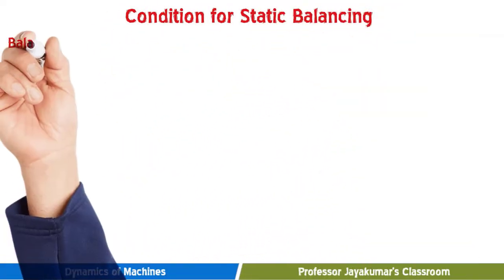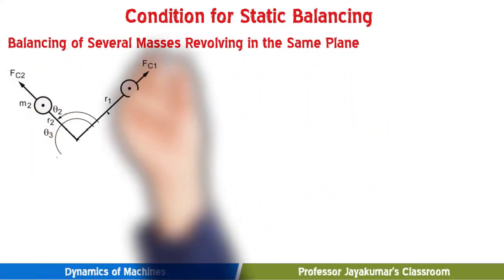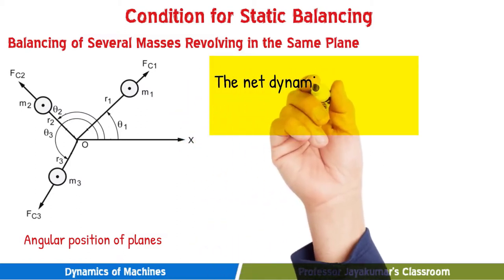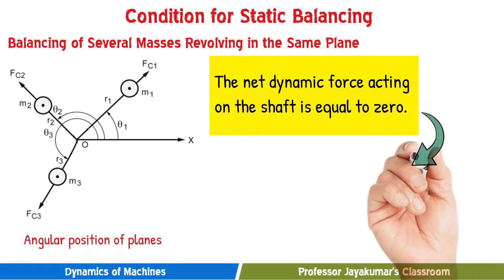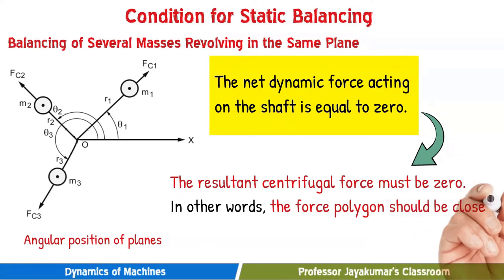Let us present the condition for static balancing. Consider several masses revolving in the same plane. In such a static balancing scenario, the net dynamic force acting on the shaft must be equal to zero — meaning the resultant centrifugal force of the system must be equal to zero. In other words, if you draw the force polygon, it should be closed. Then we can claim that the system is in static balance.